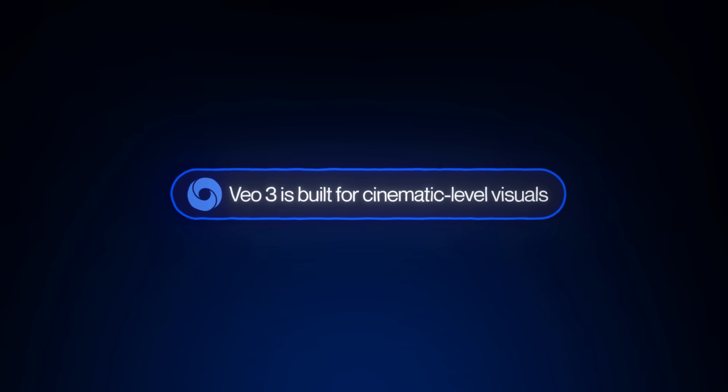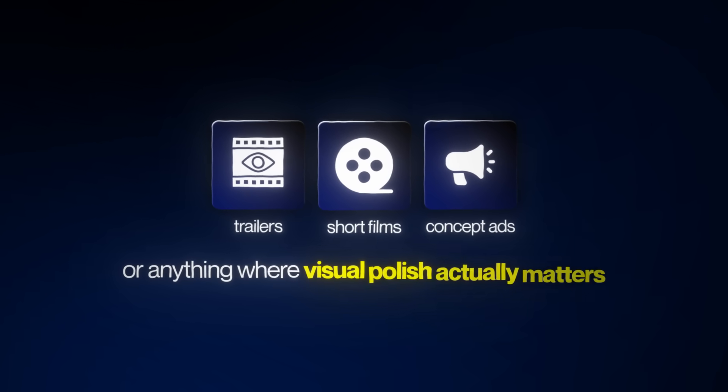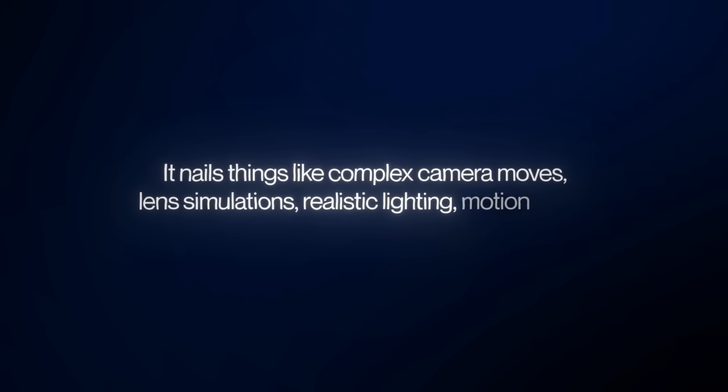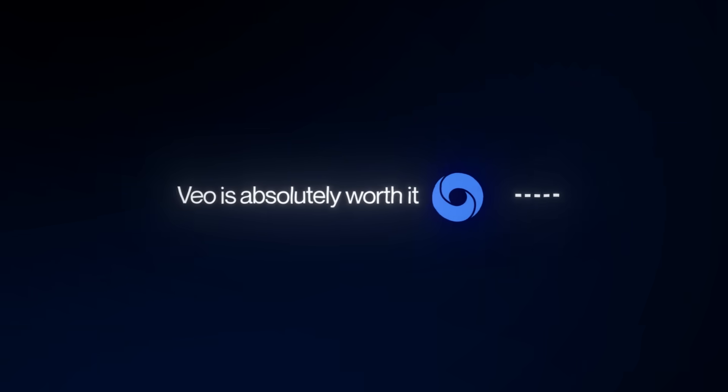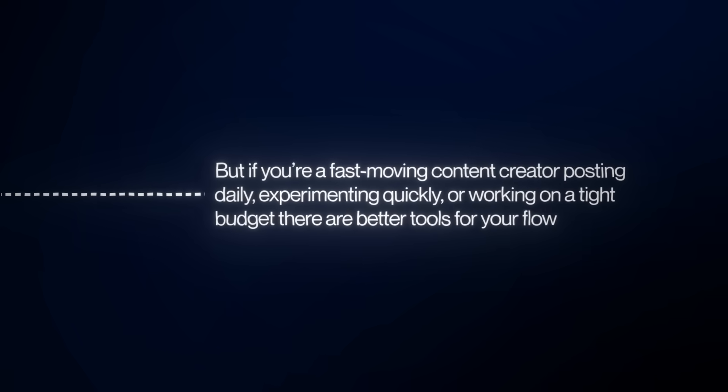Veo3 is built for cinematic-level visuals. It's the kind of tool you reach for when you're working on high-end projects like short films, trailers, concept ads, or anything where visual polish actually matters. It nails complex camera moves, lens simulations, realistic lighting, and motion depth. But it's not fast — renders take longer than most AI video generators. So if your goal is ultra-polished cinematic results and you're okay with more wait time, Veo is absolutely worth it. But if you're a fast-moving content creator posting daily, experimenting quickly, or working on a tight budget, there are better tools for your flow.